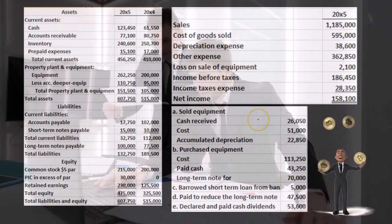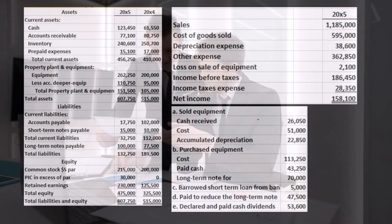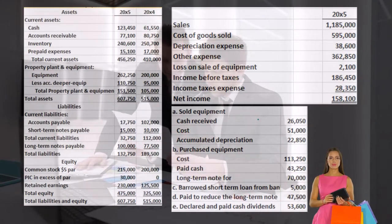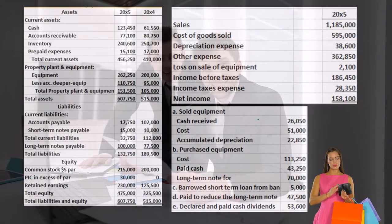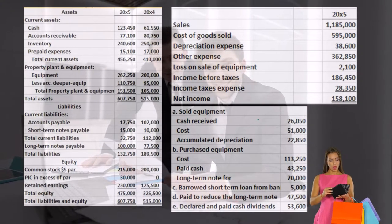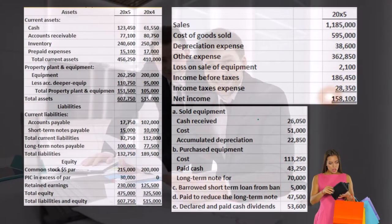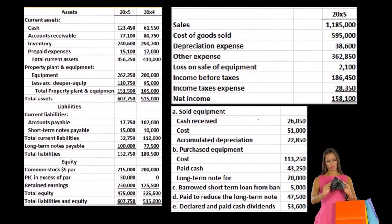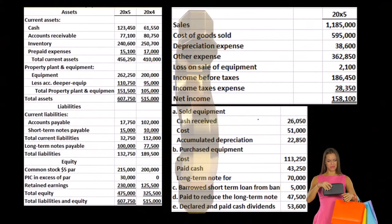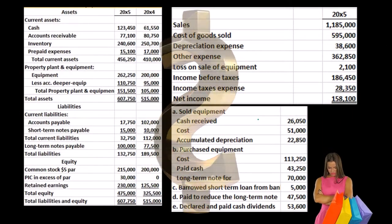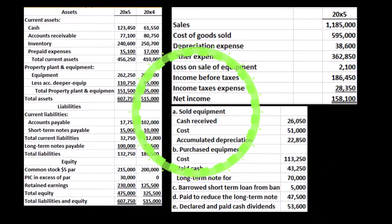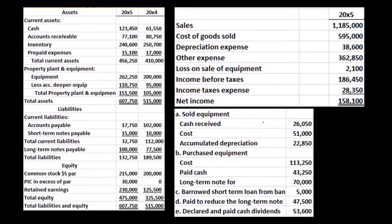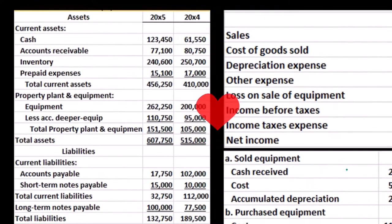In a book problem, we'll typically be told some other things related to, for example, purchases or sales of equipment, borrowings, and any cash dividends. This is added information we would need. In practice, we would just be checking these things by looking at the difference and going back to the general ledger to determine if we have any added information that needs to be adjusted on our statement of cash flows.